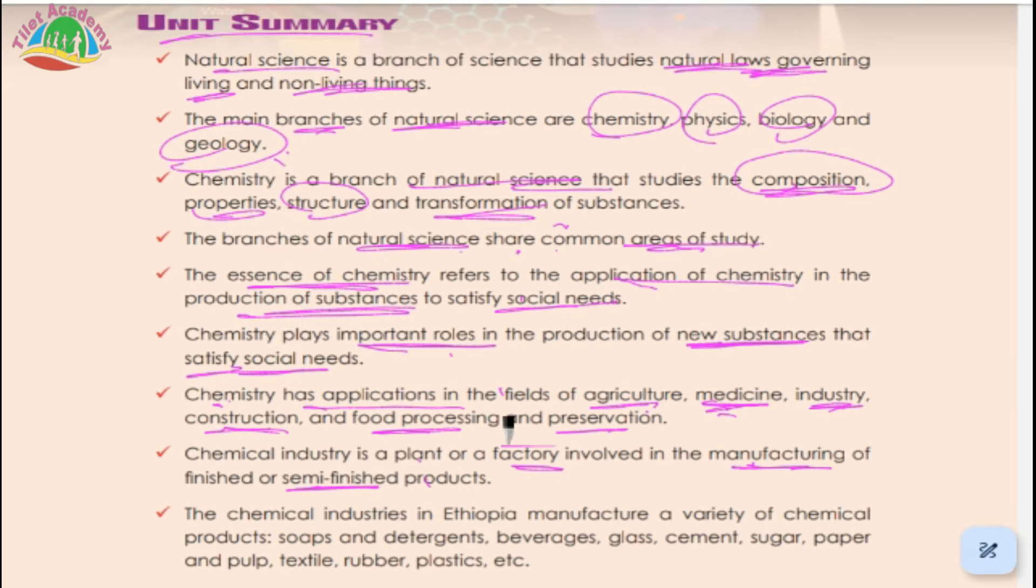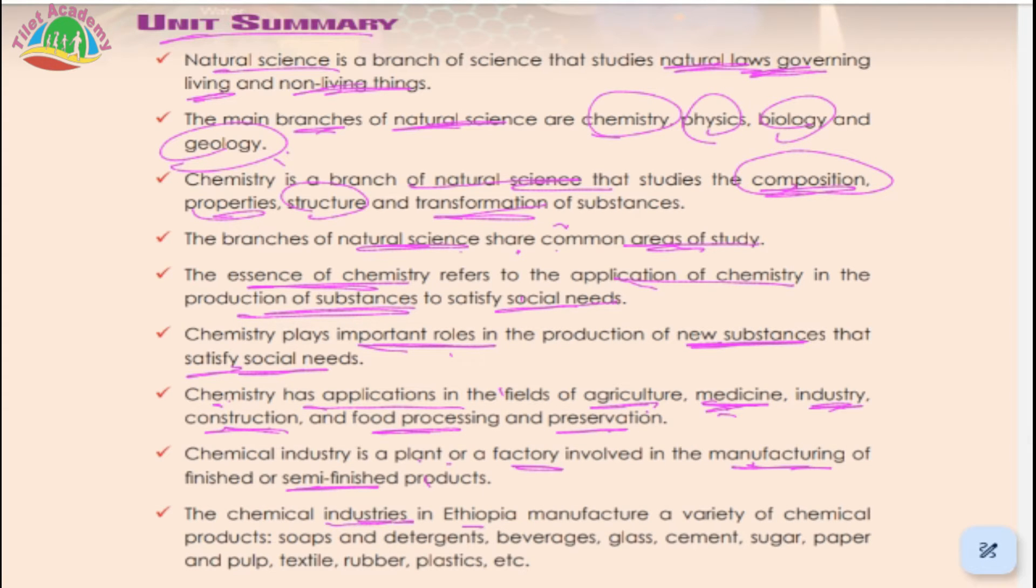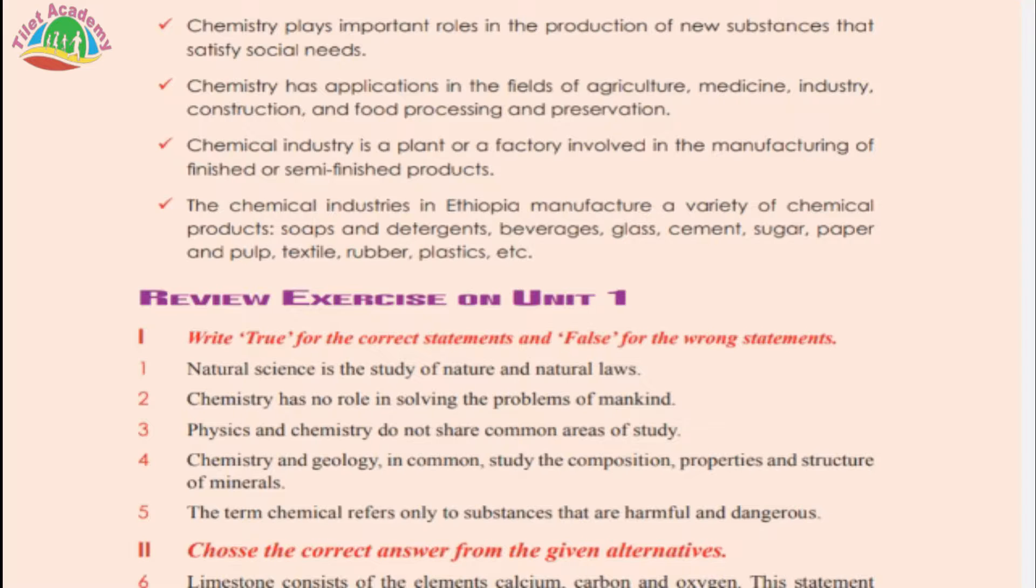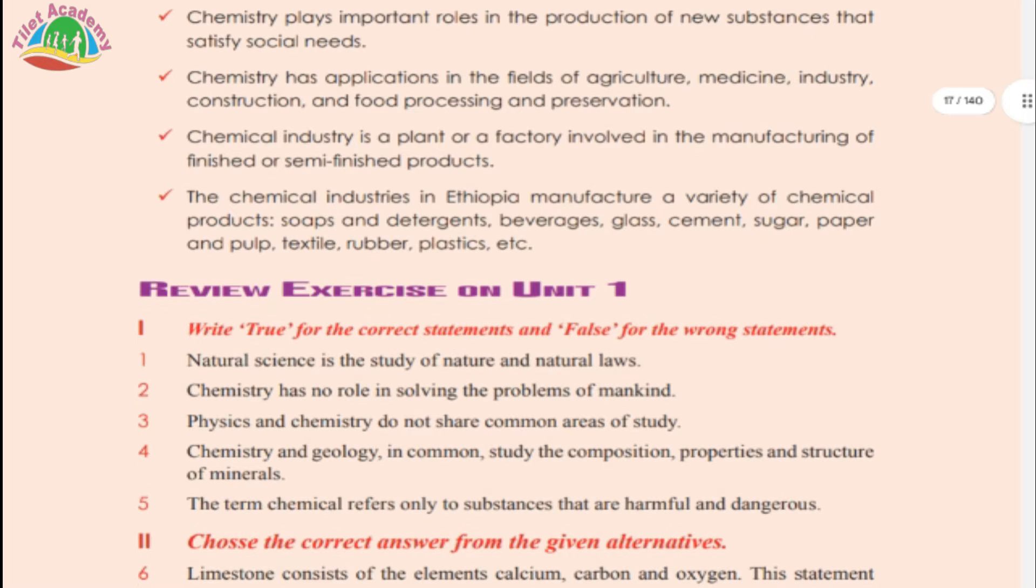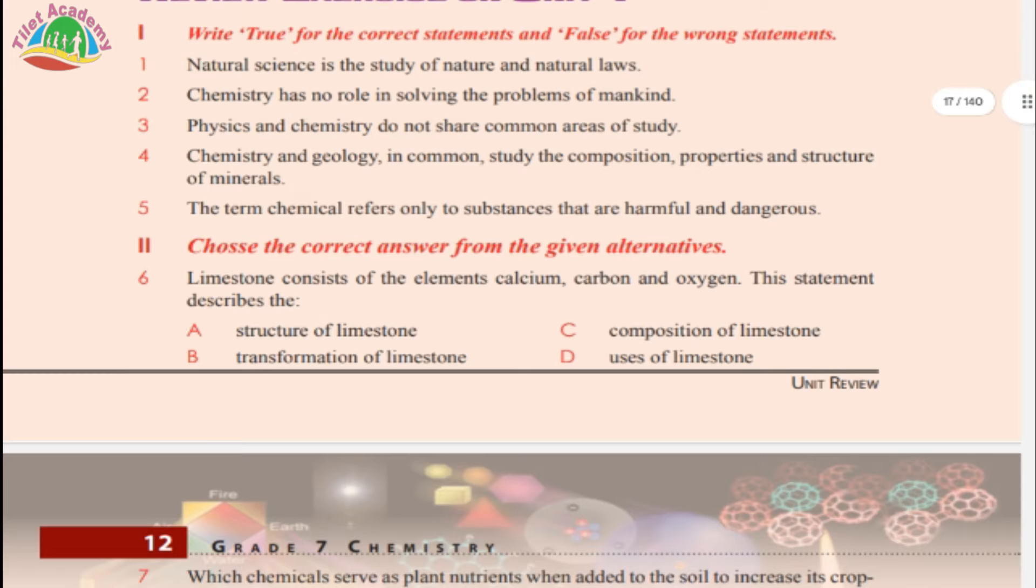The chemical industry in Ethiopia manufactures various chemical products. The chemical industries manufacture soap and detergent, beverages, glass, cement, sugar, paper, rubber, plastic and other products. Now you need to review the exercise.